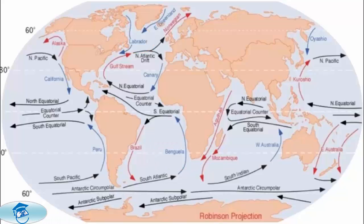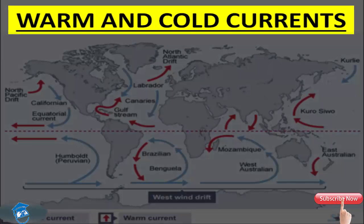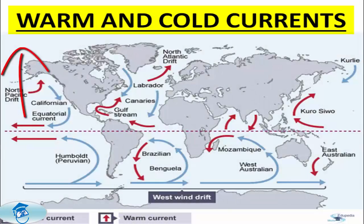Based on temperature, ocean currents can broadly be divided into two categories: the warm currents and the cold currents. The warm currents are those which flow from the low latitudes in tropical zones towards the high latitudes in the temperate and subpolar zones, bringing warm water into cold water areas.